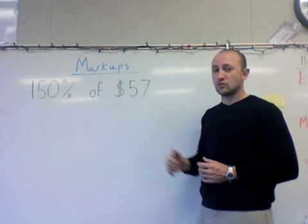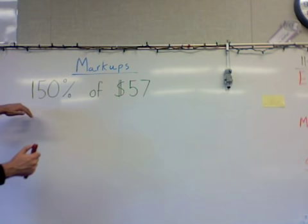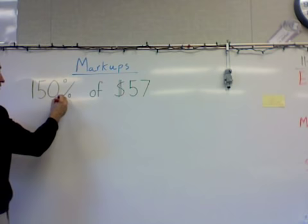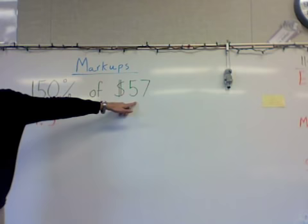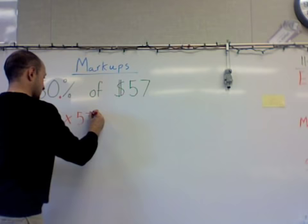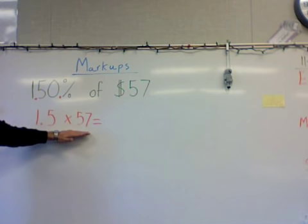So if this product costs $57 and they want to mark it up 150%, our first step is to take 150% and turn that into a decimal. We do that by adding a decimal at the end and moving it two places — one, two — and we end up with 1.5. We then want to multiply that by 57.